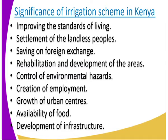Number two, we have the settlement of landless people. When this land was started, people who were landless were getting somewhere to resettle. For example, if we look at the Mwea irrigation scheme, it was used to resettle people who were landless after the colonial government took over.